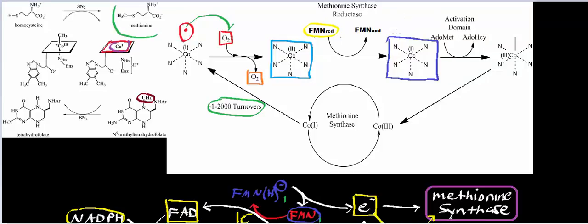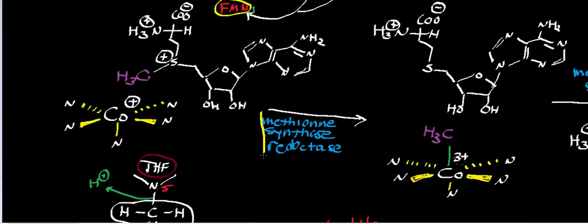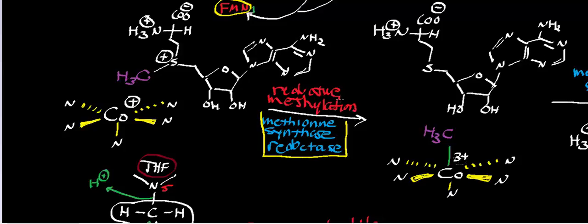But that doesn't end the mechanism, because the cobalt now has to accept a methyl group. The way it's going to do that is from S-adenosylmethionine. This reaction is still catalyzed by methionine synthase reductase. And because we're transferring a methyl group at the same time, this particular reaction is called a reductive methylation. The reason it's a reductive methylation is because we reduce the cobalt back into the one plus state, and then we're going to transfer a methyl group onto the cobalt.